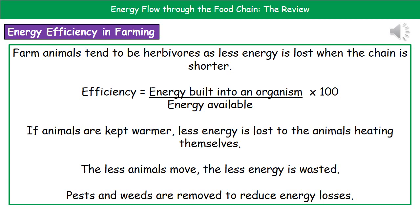The third thing farmers can do is keep animals warmer, generally in barns. This means the animals don't have to use their own energy to keep themselves warm, and therefore they're not wasting energy in doing that.